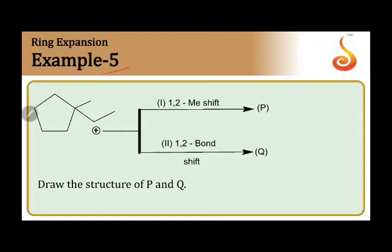Example 5, ring expansion. We have a compound here. There is a plus charge present on this carbon—it's a carbocation. This carbocation with a plus charge is attached to two other carbons, so we can call it secondary.